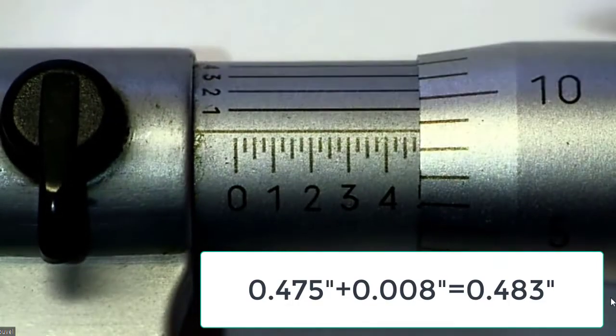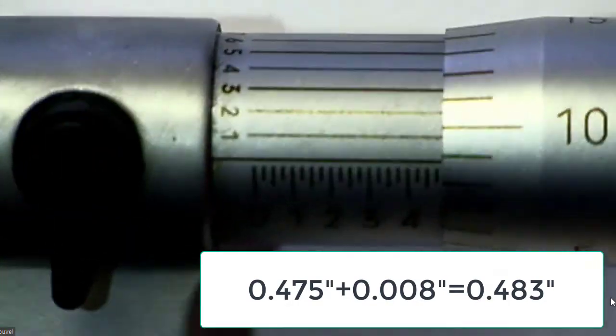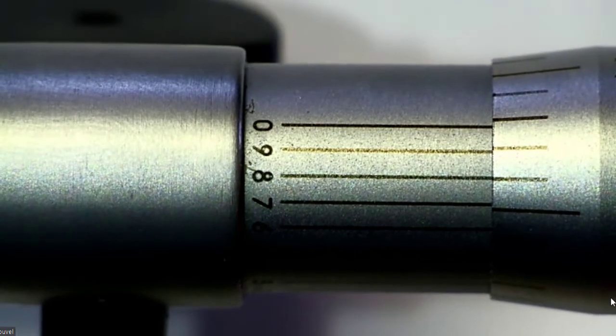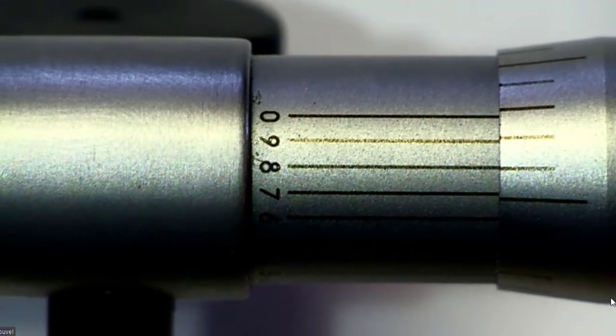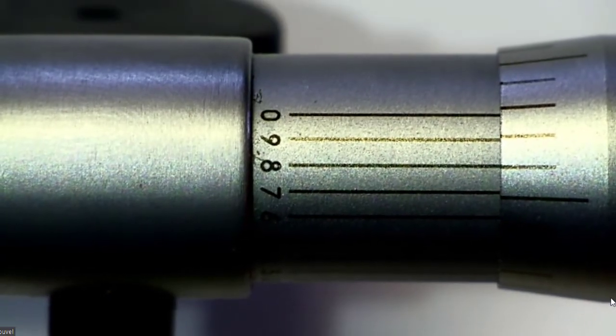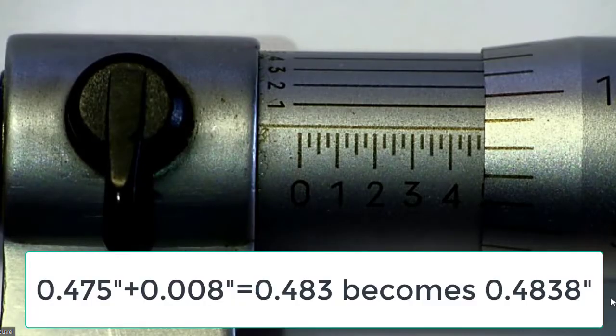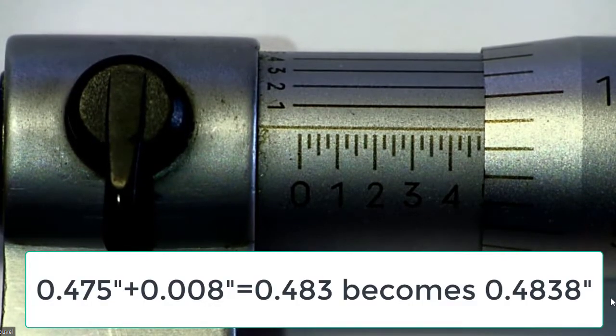Now, we'll look for the vernier number that lines up best, and the eight lines up really, really well, and so that'll be our fourth digit, and we should call this .4838, and we're done.